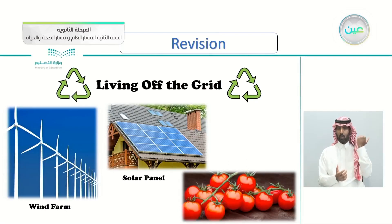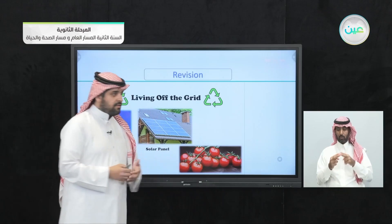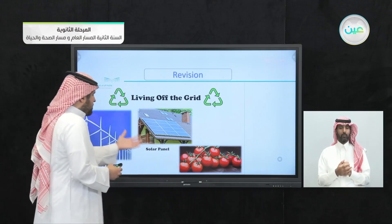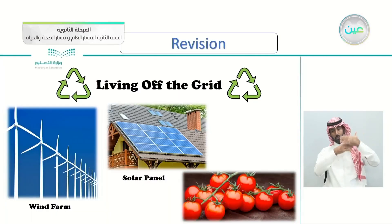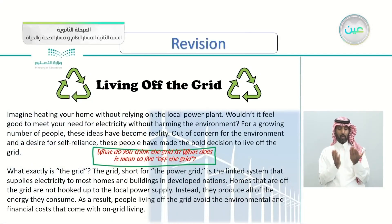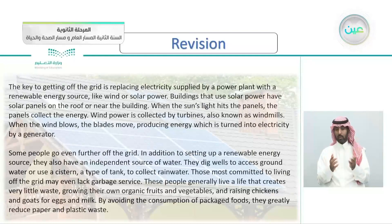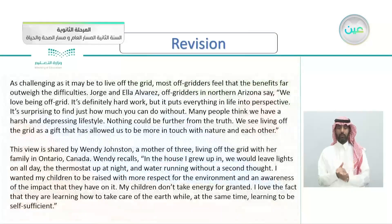Recalling the previous lesson on 'living off the grid': off the grid means off the power grid, using maybe solar panels, wind farms, or locally grown food. From the reading lesson, most off-gridders feel that the benefits far outweigh the difficulties, even though living off the grid can be challenging.